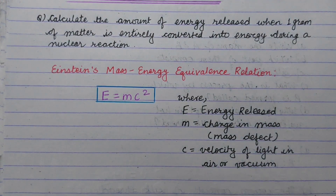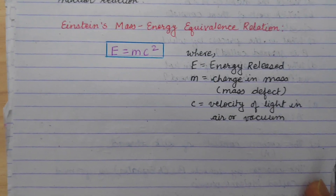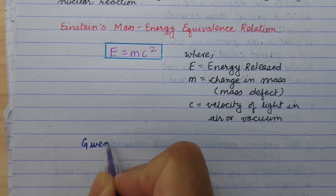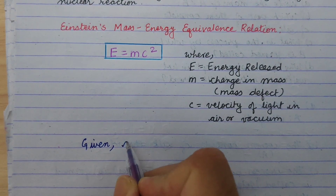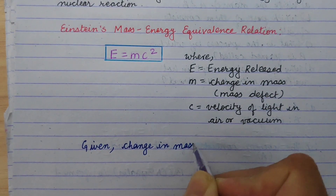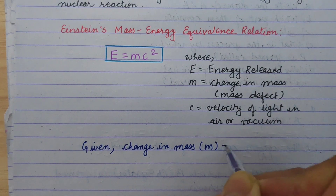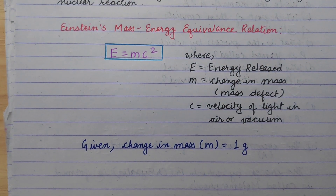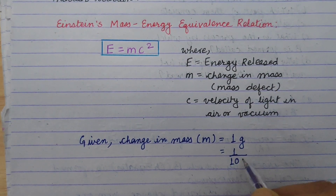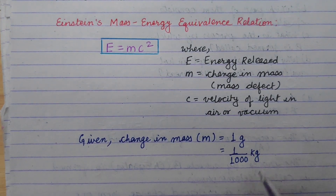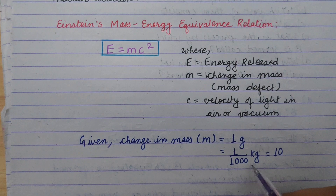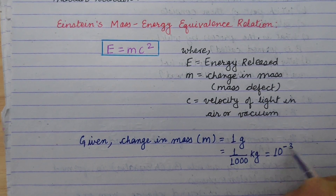Now I am going to show you the calculation. Given: change in mass is 1 gram. Converting to kilograms, this is 1 divided by 1000, which is 1 divided by 10 to the power 3, giving us 10 to the power minus 3 kg.